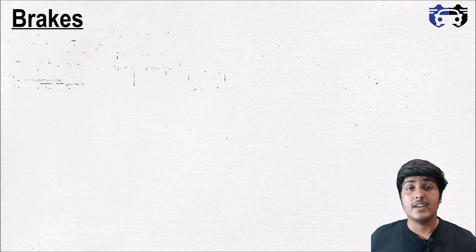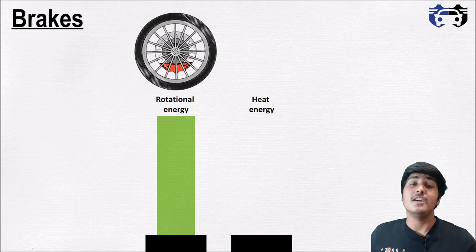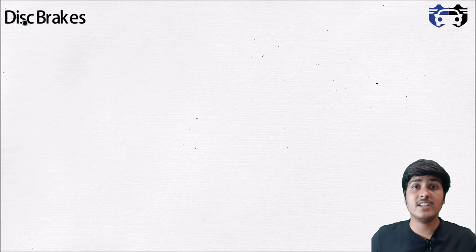Brake is one of the most important parts of a car. It helps your vehicle to stop in a given amount of time to avoid accidents. In a nutshell, a brake converts one form of energy into another — it converts the rotational energy of the wheel into heat energy, and for this it uses friction.